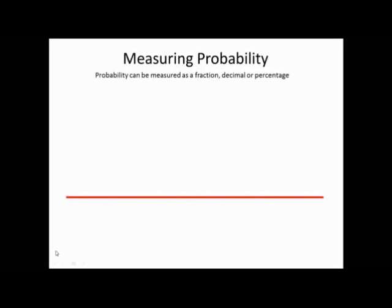We measure probability on a scale from 0 to 1. If something has a probability of 0, that means it's impossible that it's going to happen. For example, what are the chances that we are not going to have any more maths homework this year? That's impossible — you definitely will have more maths homework this year. That would be an example of something that is impossible, so it would have a probability of 0.